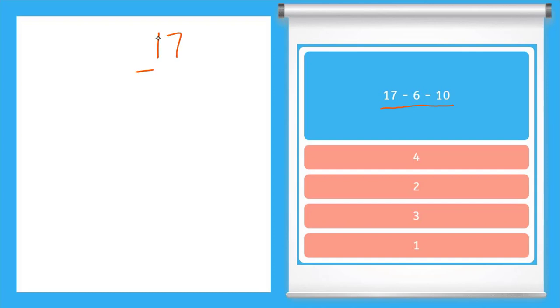17 minus 6 gives us what? 7 minus 6 is 1. 1 minus nothing is 1. So then I have 11. Now if I take that answer and then subtract 10, I can do 1 minus 0 is 1. 1 minus 1 is 0. I don't need to write anything there. And my final answer is 1.